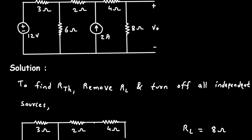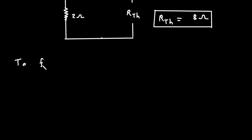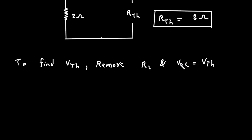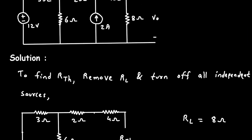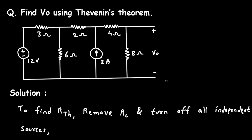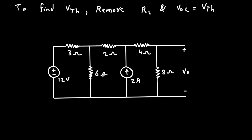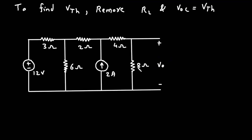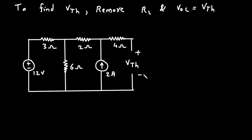Next we have to find the value of VTH, that is Thevenin's voltage. To find VTH, we have to remove RL, and VOC is equal to VTH — that means we have to find the open circuit voltage, which will be equal to Thevenin's voltage. Now let's remove RL; this 8 ohm is the value of RL. And now this will be our VTH — this is positive and this is negative. Now here this 4 ohm is open circuited, meaning this node voltage will be our VTH.